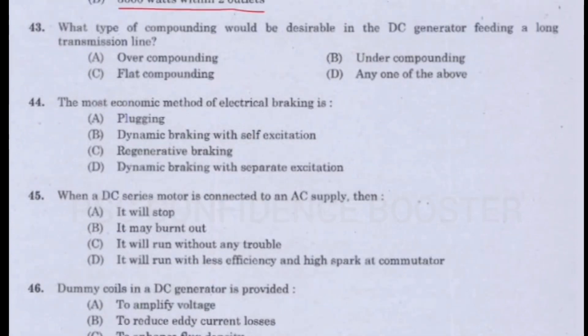Question number 43. What type of compounding would be desirable in the DC generator feeding a long transmission line? Option A - Over compounding. Option B - Under compounding. Option C - Flat compounding. Option D - Any one of the above. Answer is Option A: Over compounding.